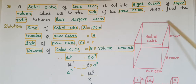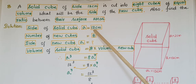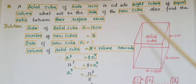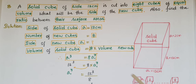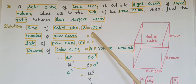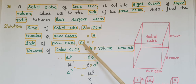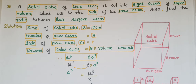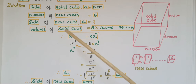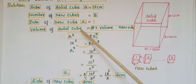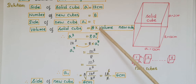Here, a solid cube of side 12 centimeters is given, so a is equal to 12 centimeters. This solid cube is cut into 8 cubes of equal volume, so the number of new cubes is equal to 8. The side of the new cube we have to find is a1.